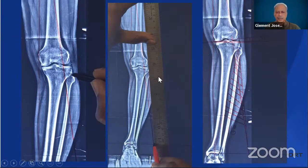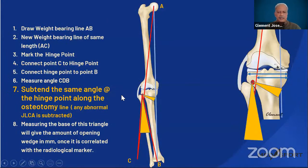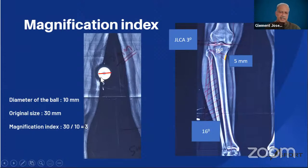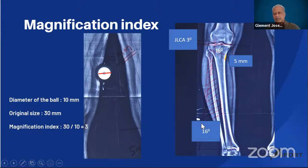You mark the hinge point and construct a triangle. Based on the hinge point, the same angle is subtended onto the medial tibial cortex and a second triangle is constructed. The base of this triangle is measured, and according to the magnification ratio, you get the intended amount of opening of the wedge in millimeters. The spherical marker ball is 30 mm in diameter; if it measures 10 mm on the X-ray, the magnification index is 30 ÷ 10 = 3.